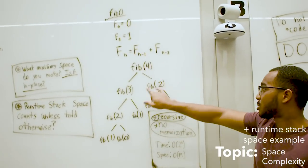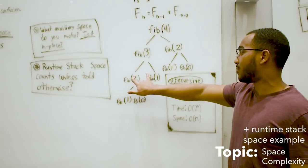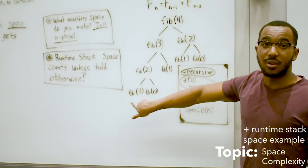This is what the recursion tree looks like. If I want to know Fib 4, I ask myself Fib 3, Fib 2. If I want to know this, I ask myself 2, 1. If I want to know 2, I ask myself 1 and 0.